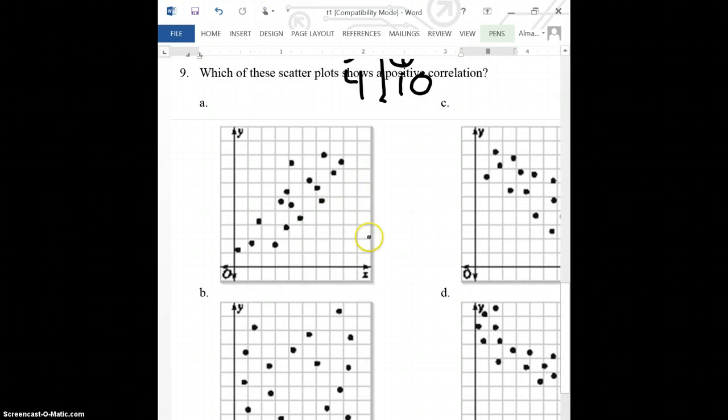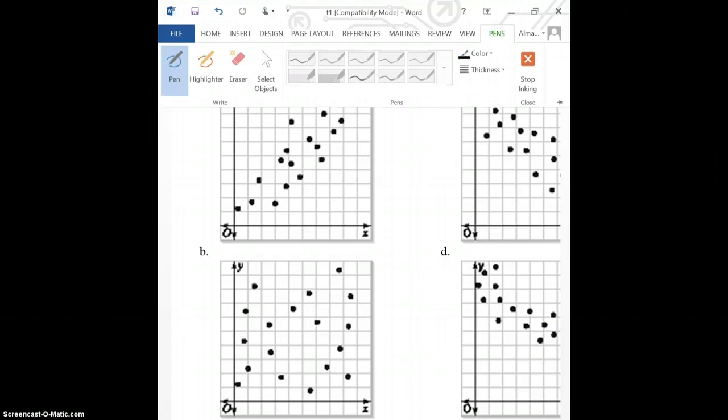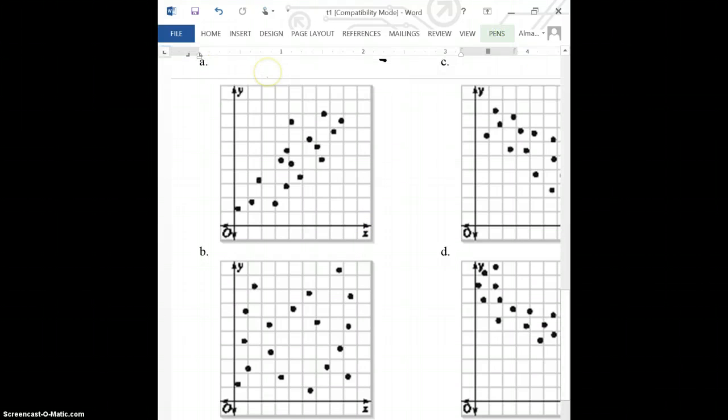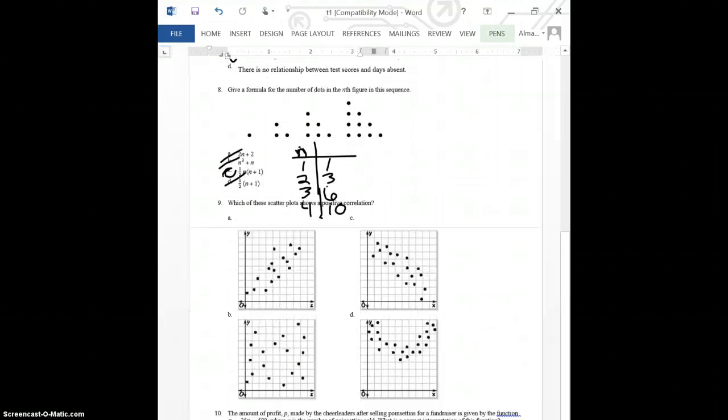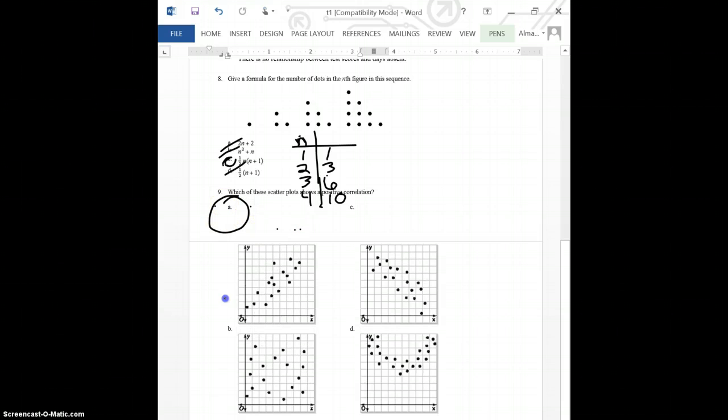Which of these scatter plots shows a positive correlation? In this problem, my answer is going to be the one that all the dots are going up. And there's only one where the dots are going up. That is answer choice A. So, here the answer is A because all the dots are going up.